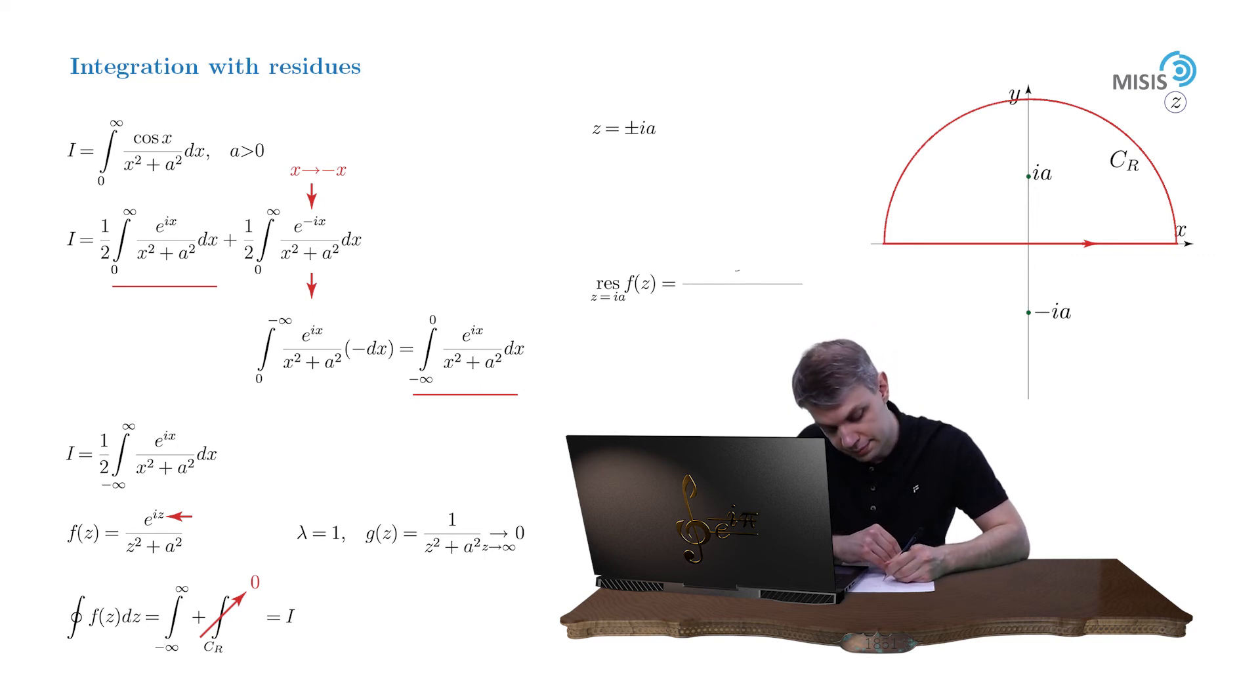We decompose our denominator into z plus iA times z minus iA. It's a first-order pole, so we multiply it by z minus iA and make a cancellation. And in the end we set z equal to iA.